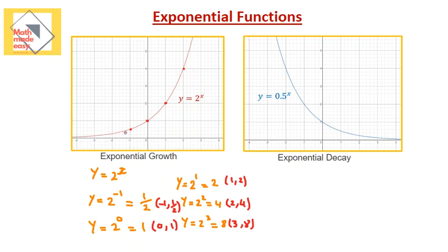As you can see, the values of y increase as the values of x increase, so what it shows here is what we call a growth. The values of y are growing rapidly in an exponential function. For example, at x=3 y is 8, at x=4 y is 16, then at x=5 y is 32. The difference between each value of y and the one before it gets bigger as the values of x increase. So this represents an exponential growth.